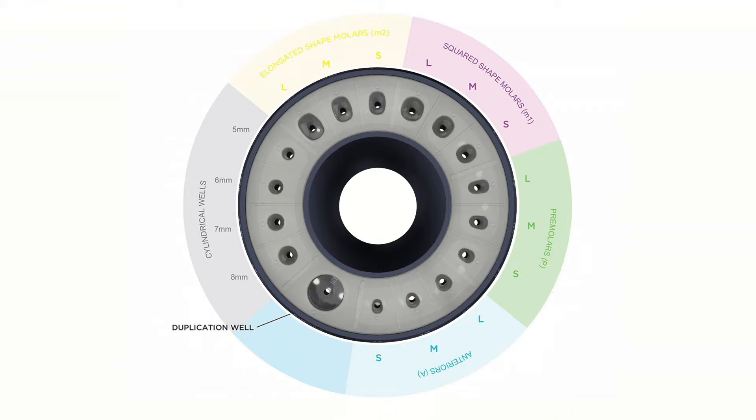And the fourth group refers to the shape and sizes of the root rank of elongated molars: small, medium, and large.